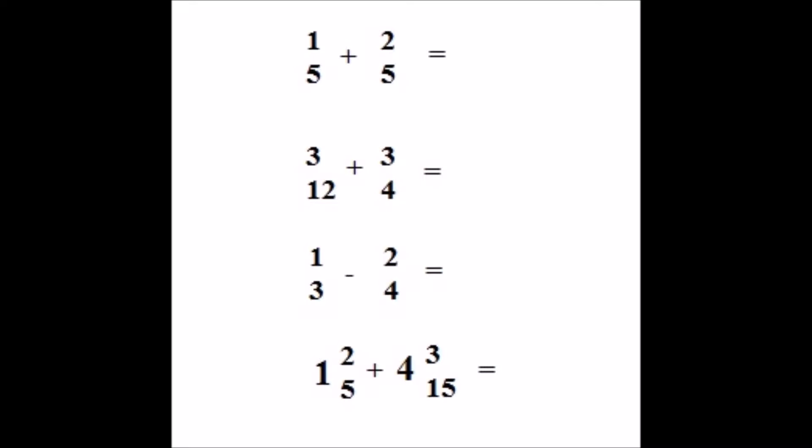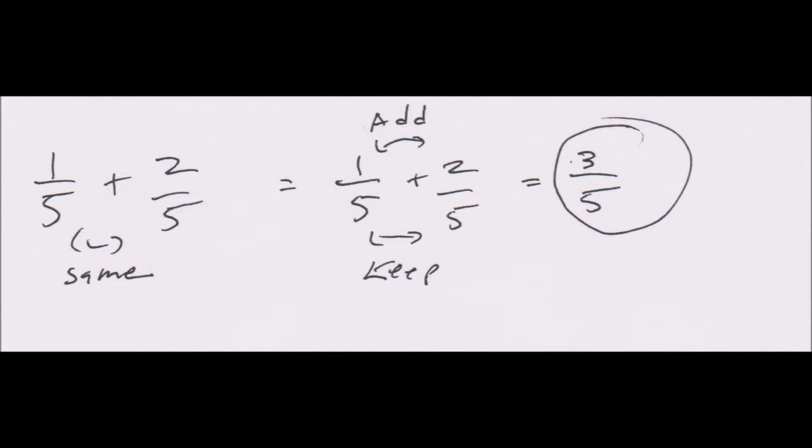We're going to go over four examples. They're pretty simple but a good way to showcase the rules. The first one will be same denominators, the second one is different denominators, the third one is when you get a negative solution, and the last one will be adding mixed numbers.